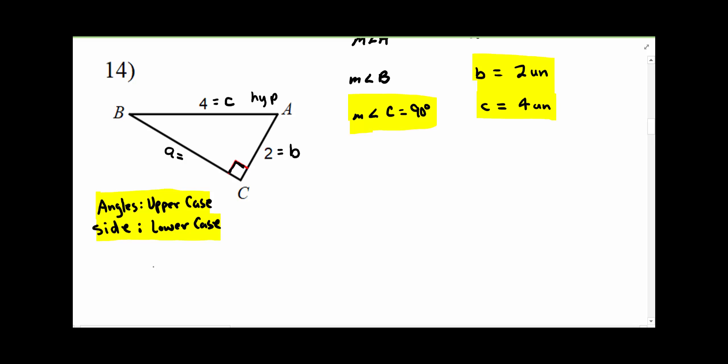So we know that 4 squared subtract one of the other sides, which is 2 squared, will give you the third side squared. So 4 squared is 16, subtract 4, is equal to a squared.